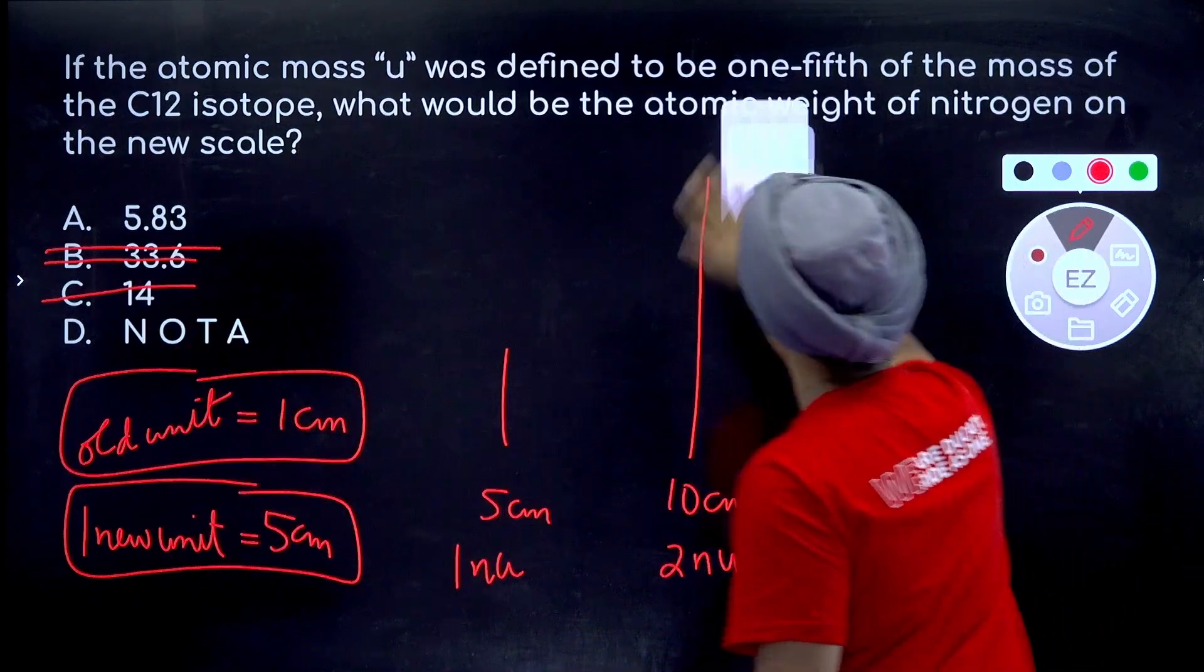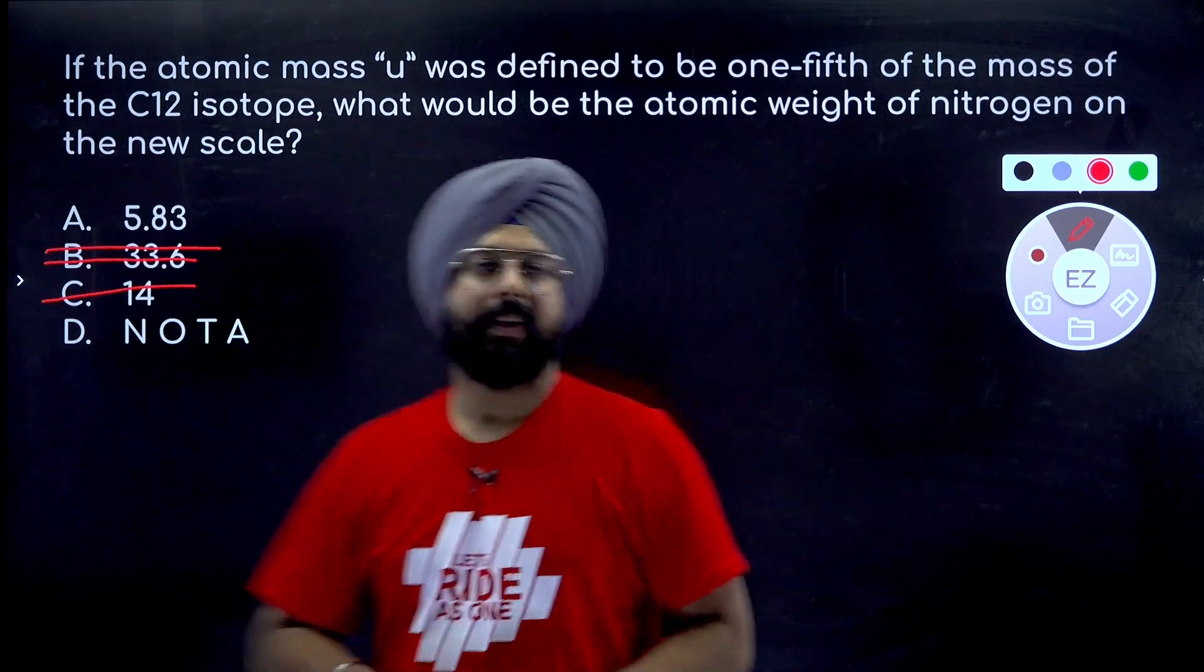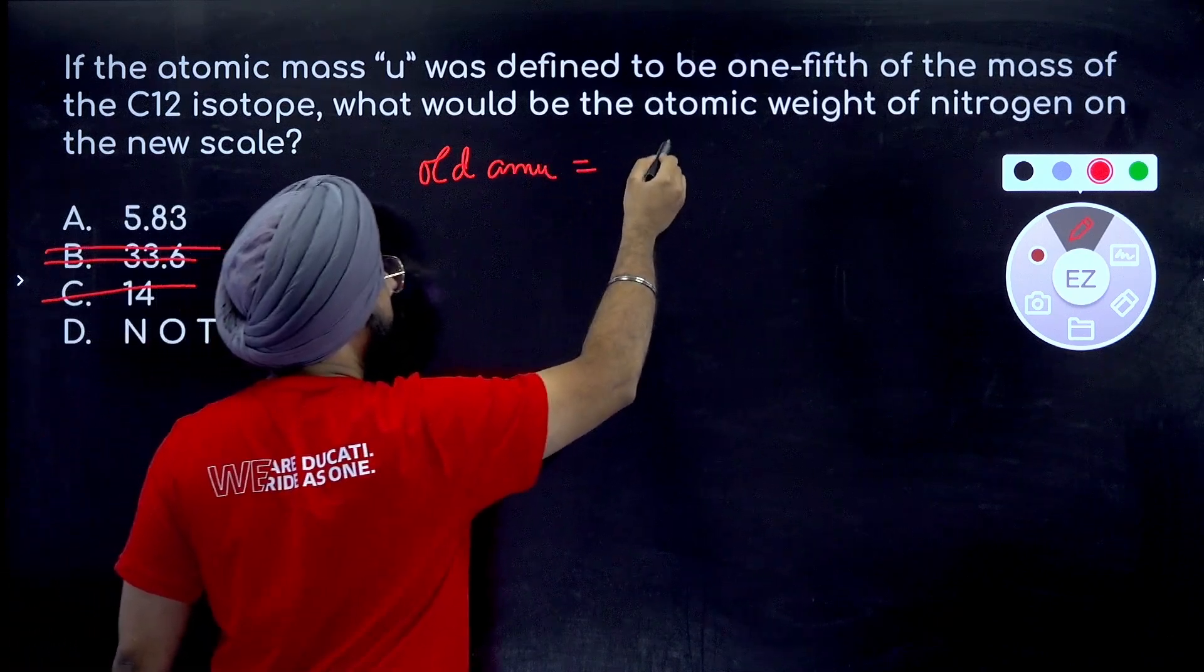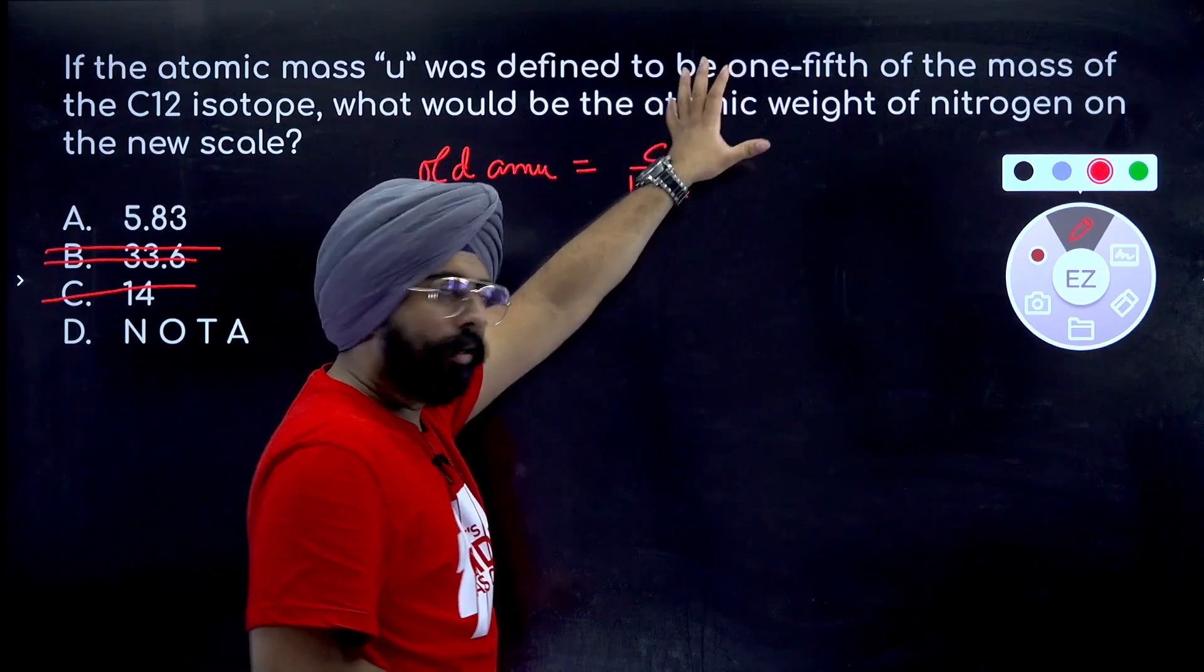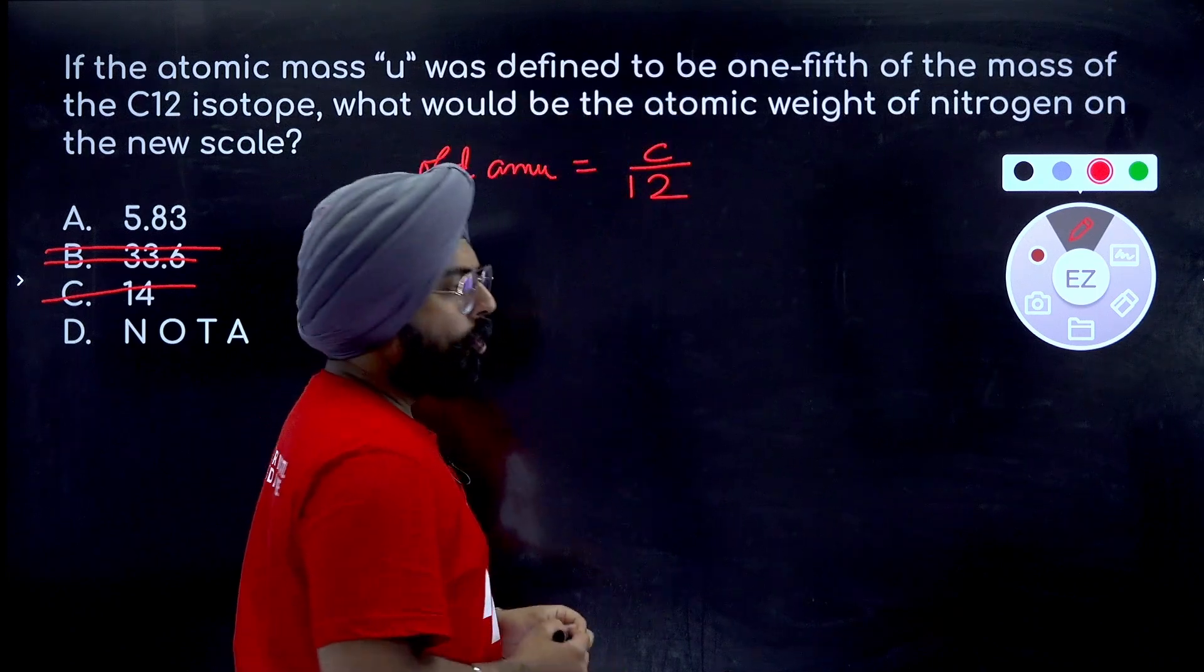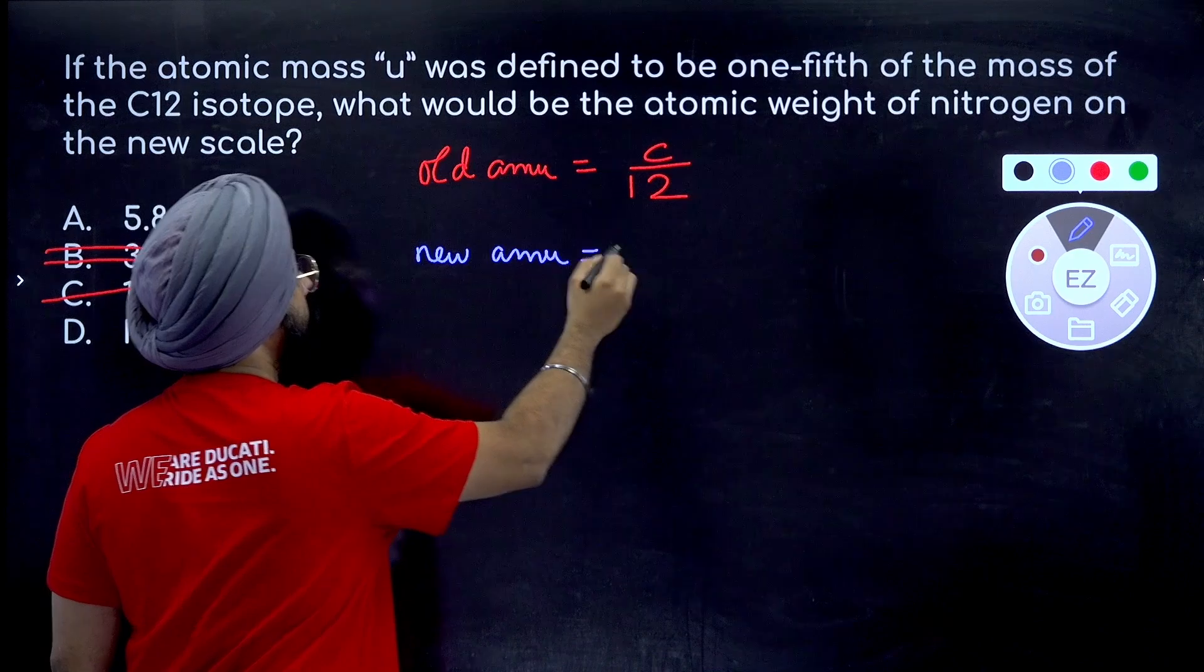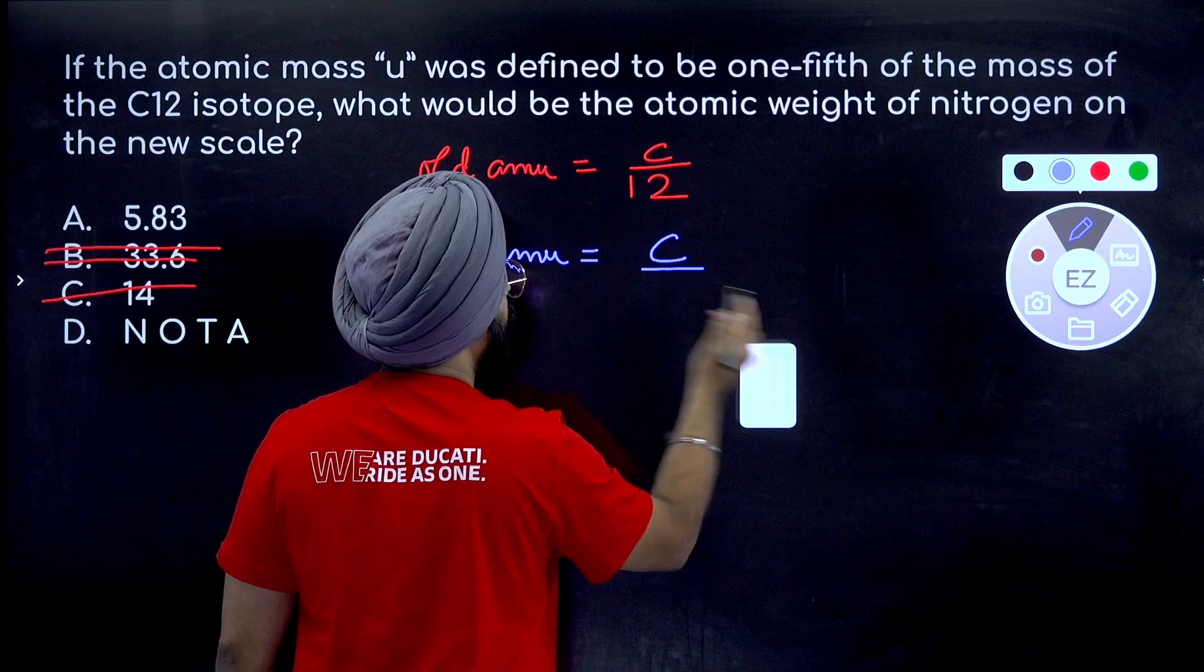So people, let's try to solve this question. Old atomic mass unit is equal to carbon divided by 12. I'm not going to write C12 again and again, makes too much mess. Carbon divided by 12, mass of 1 carbon divided by 12 was the old atomic mass unit. Let's write the new atomic mass unit is equal to C by 5.